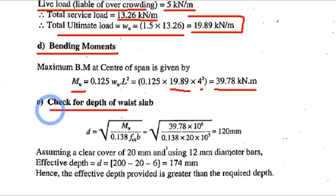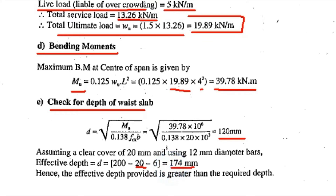Next we check whether the depth is sufficient. Using the formula D equals √(Mu / (0.138 × fck × b)): Mu is 39.78 × 10⁶ N·mm, fck is 20, and b is 1000 mm, giving a minimum required depth of 120 mm. Assuming clear cover of 20 mm and using 12 mm diameter bars, effective depth provided equals 200 minus 20 minus 6 equals 174 mm. Since 174 mm exceeds 120 mm, the design is safe.